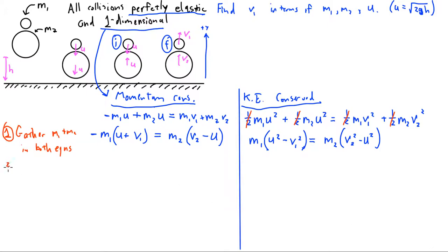Step two: we want to factor the kinetic energy equation. The trick is - this is hard to see if you don't know where you're going - but this is the difference of two squares, and so is this. So we want to factor the kinetic energy equation as the difference of two squares. M1 and then this side is going to be U plus V1 times U minus V1. And that's going to equal M2 times V2 plus U times V2 minus U.